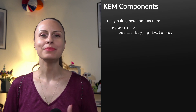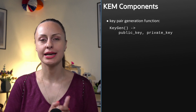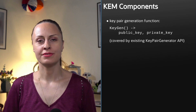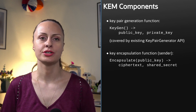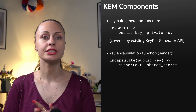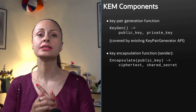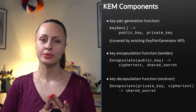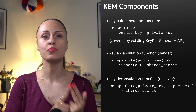The Key Encapsulation Mechanism API makes this possible through its components: a key pair generation function that returns a public key and a private key — already covered by the key pair generation API; a key encapsulation function called by the sender, which takes a public key as input and outputs a shared secret value and an encapsulation, a ciphertext of this secret value; and a key decapsulation function that takes as input the encapsulation and the private key, and outputs the shared secret value.